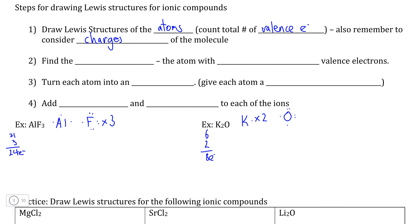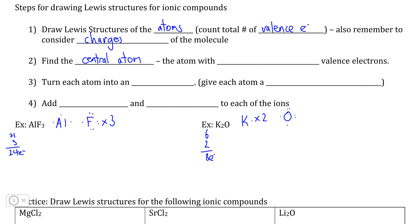Now that we have all of this information, the next thing we need to determine is what the central atom of the compound is going to be. The central atom is always going to be the atom with the most unpaired valence electrons.